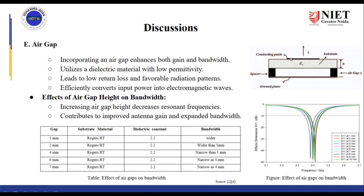The next technique is introducing air gaps between the ground plane and the substrate. This will improve both bandwidth and gain. To incorporate this technique, we use a lower dielectric material. It also leads to low return loss, which results in a favorable radiation pattern. As we increase the air gaps, the bandwidth gets narrower. When the air gap between the substrate and the ground plane is kept as low as 1 mm, we get a wider bandwidth.